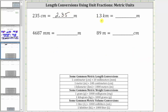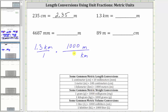Now let's convert 1.3 kilometers to meters. We begin by writing 1.3 kilometers as a fraction with a denominator of one. Looking at the conversions, one kilometer is equal to 1,000 meters. Since we want kilometers to simplify out, for the unit fraction we have to have kilometers in the denominator and meters in the numerator. The conversion is one kilometer equals 1,000 meters, and therefore the unit fraction is 1,000 meters over one kilometer.